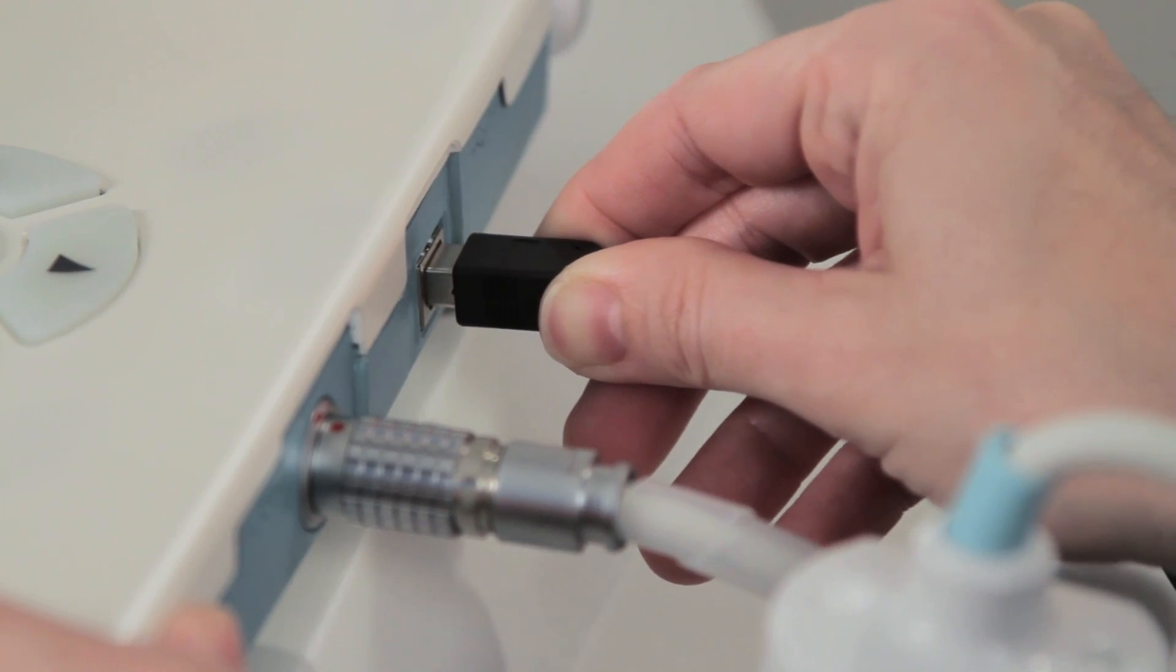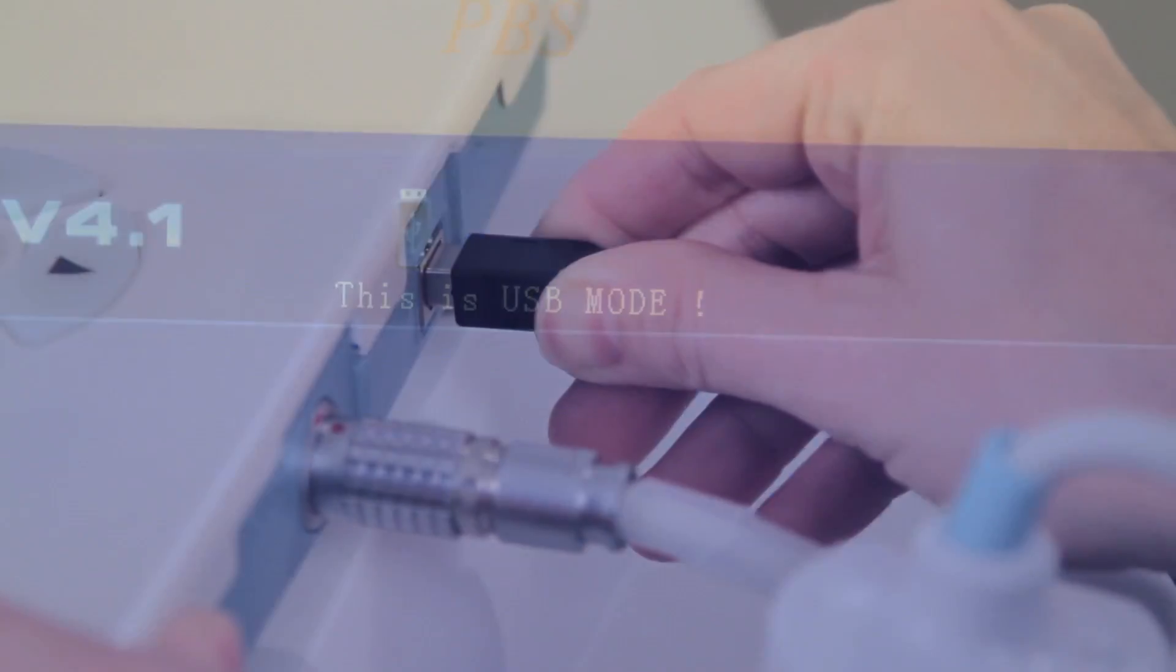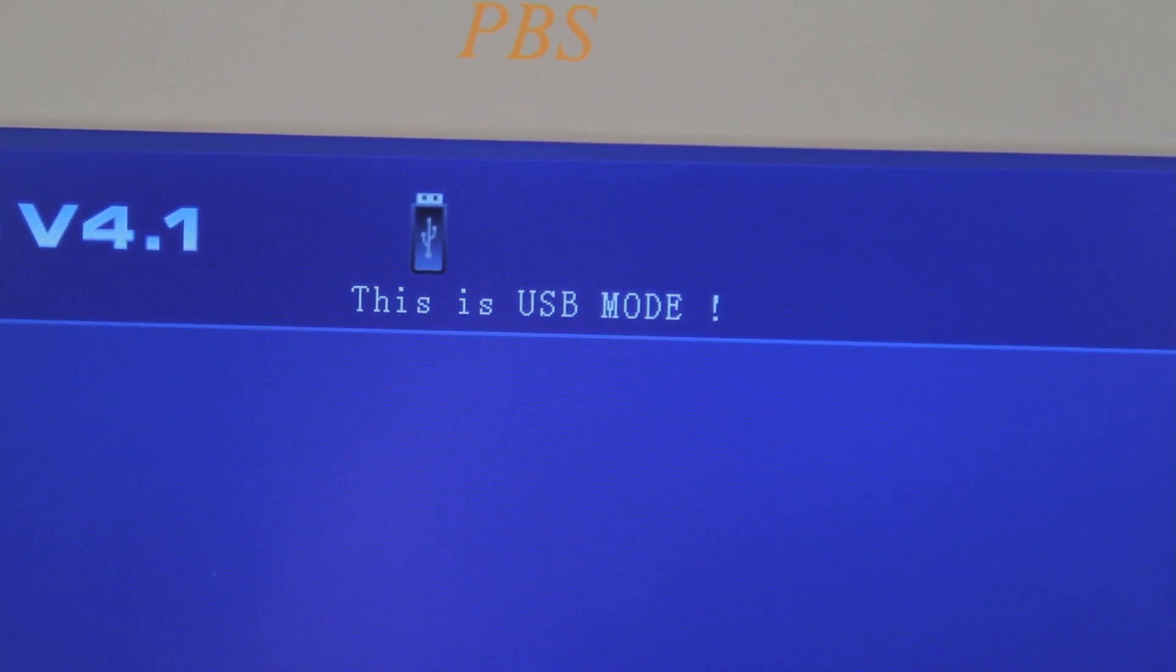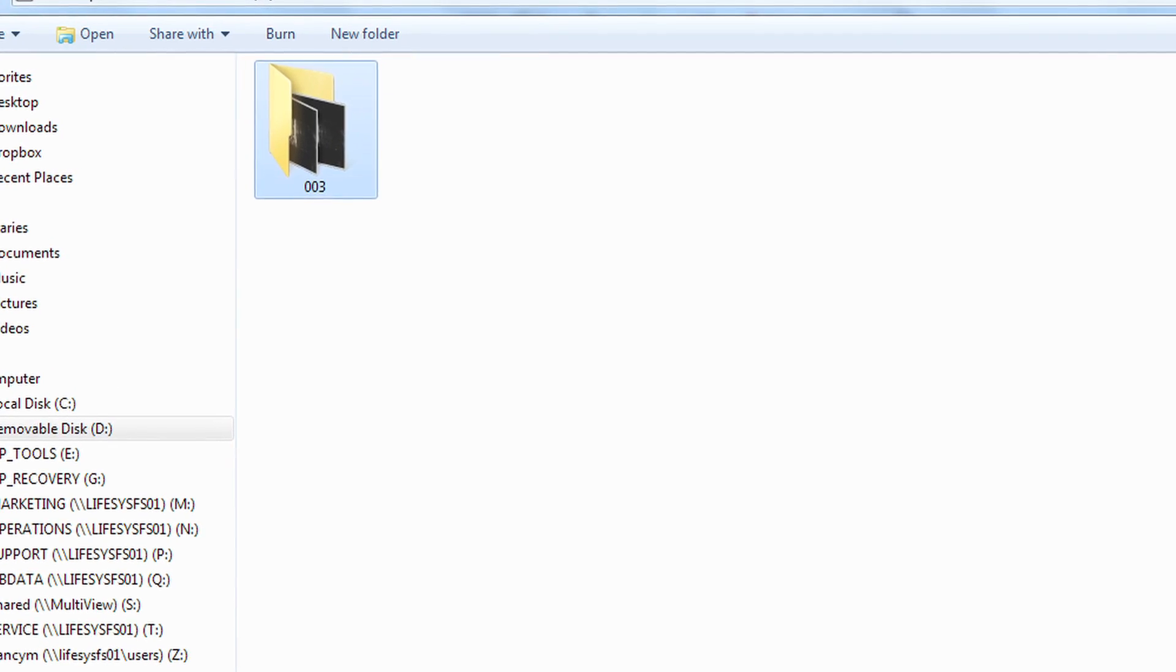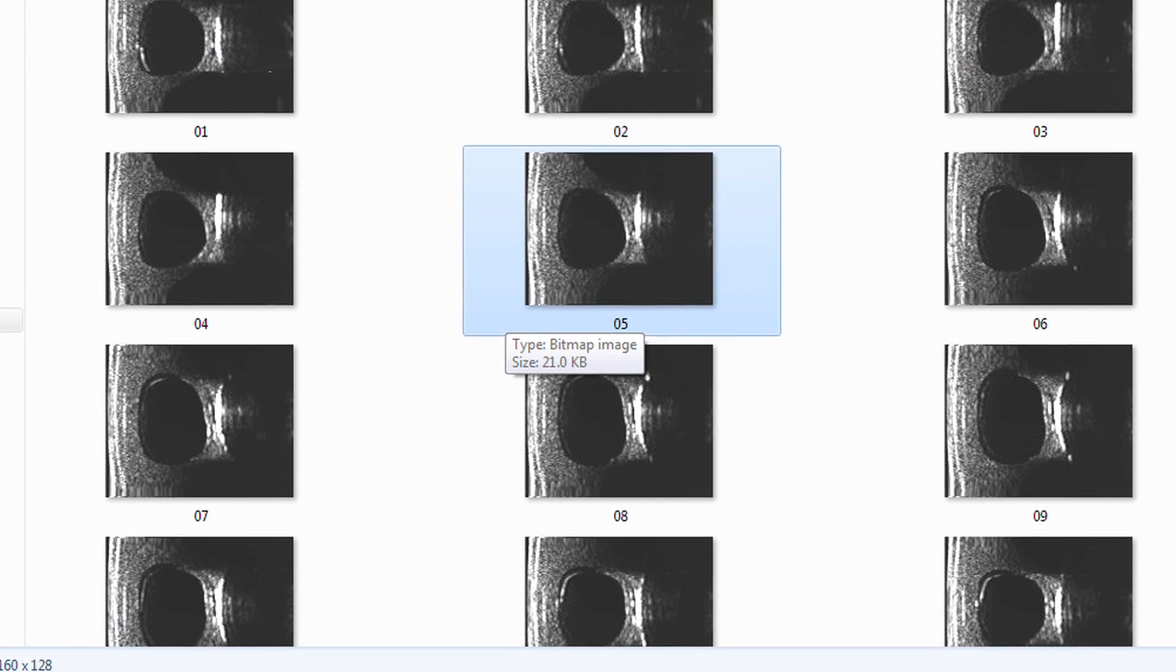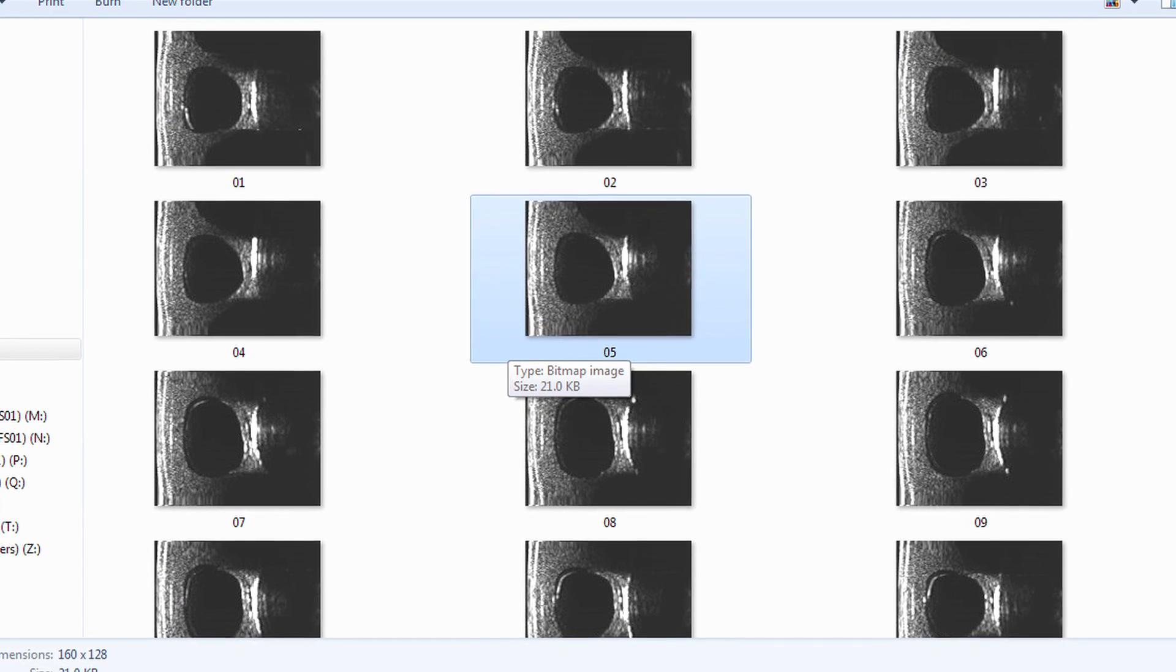You may export the historical data saved in the system to your PC using a USB connection. The system will also build a folder for each user. The info in the folder should correspond with the patient's ID. Only grayscale images and a copy of saved readings will be saved in each folder.